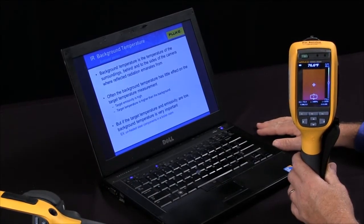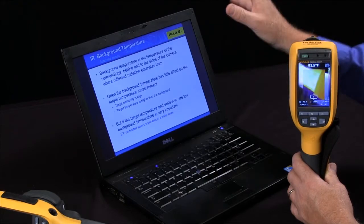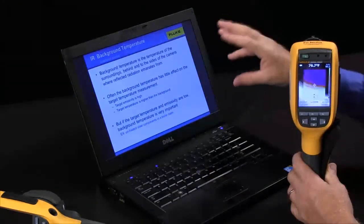How do you determine the background temperature when you're taking an IR image and how can you enter it into your Fluke thermal imager? Background temperature is the temperature of the surroundings, and this is going to affect your image.